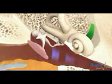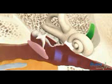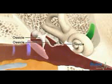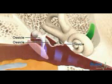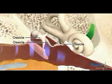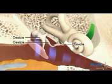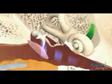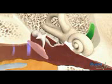These vibrations are then passed on to the middle ear. The middle ear contains three tiny bones called the ossicles. These are joined together and to the eardrum. They amplify the sound wave and pass it on to the inner ear.